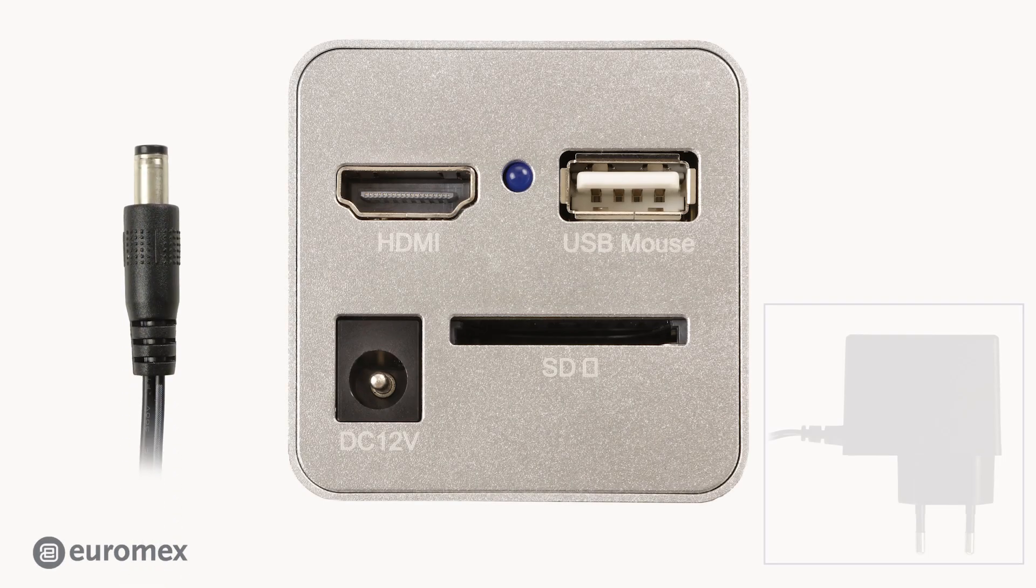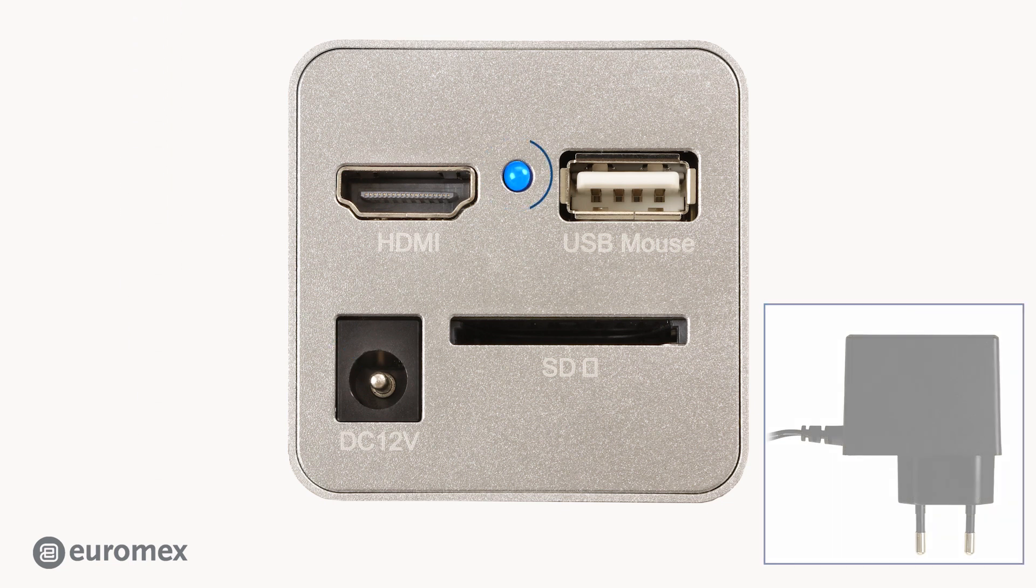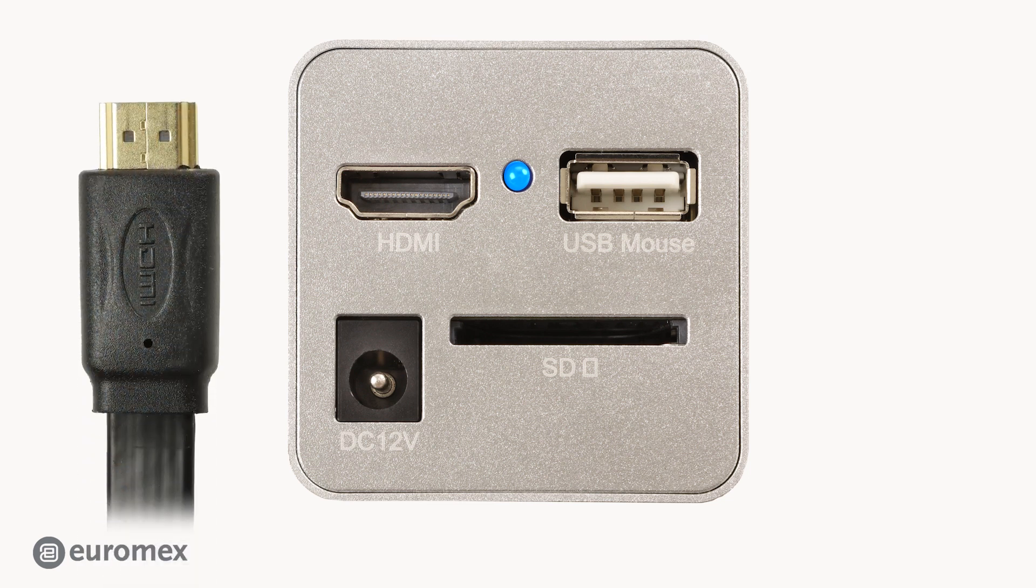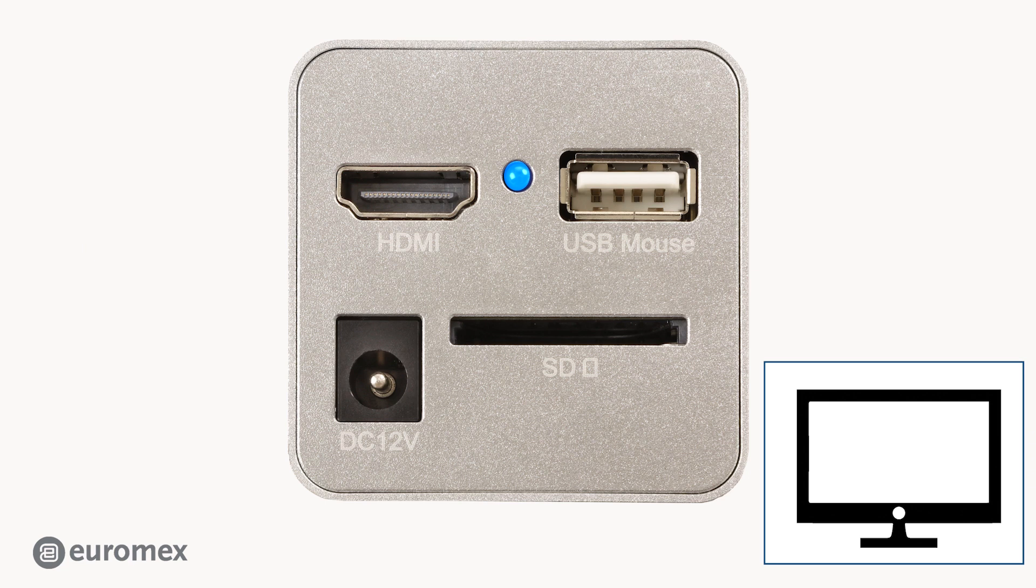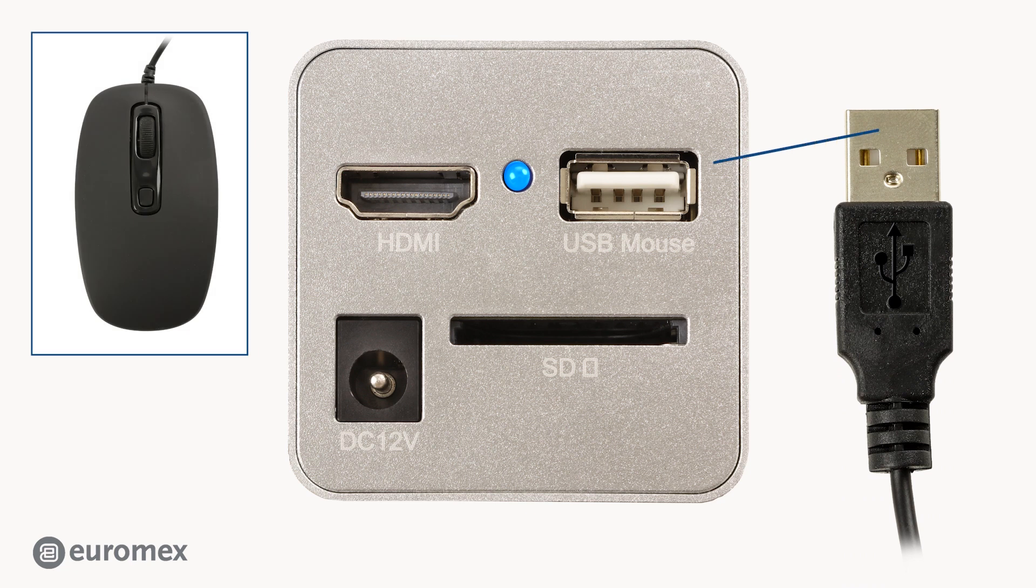Let's start with the power adapter. The LED flashes a couple of times until the camera is ready, then the LED stays on. Next, the HDMI cable is connected to the camera while the other side connects to a screen. The USB mouse is connected to the USB port.